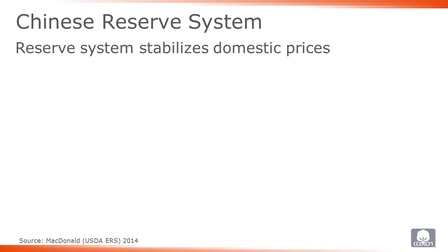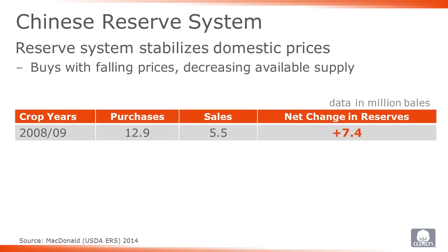Throughout its existence, the reserve system has operated to help limit volatility. In periods of falling prices, such as the one that occurred with the global recession during the 2008-2009 crop year, the reserve system was an active buyer of cotton. By buying and withholding cotton from the market, the reserve system absorbed some excess supply and likely prevented domestic prices from falling further than they did.